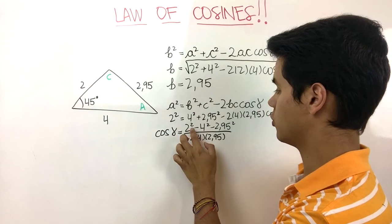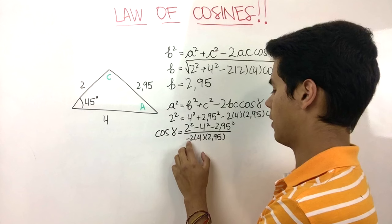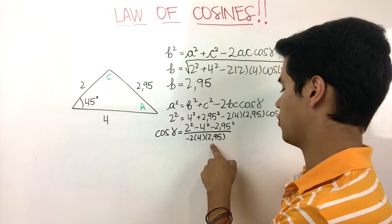The cosine of the angle is equal to 2 squared minus 4 squared minus 2.95 squared divided by negative 2 times 4 times 2.95.